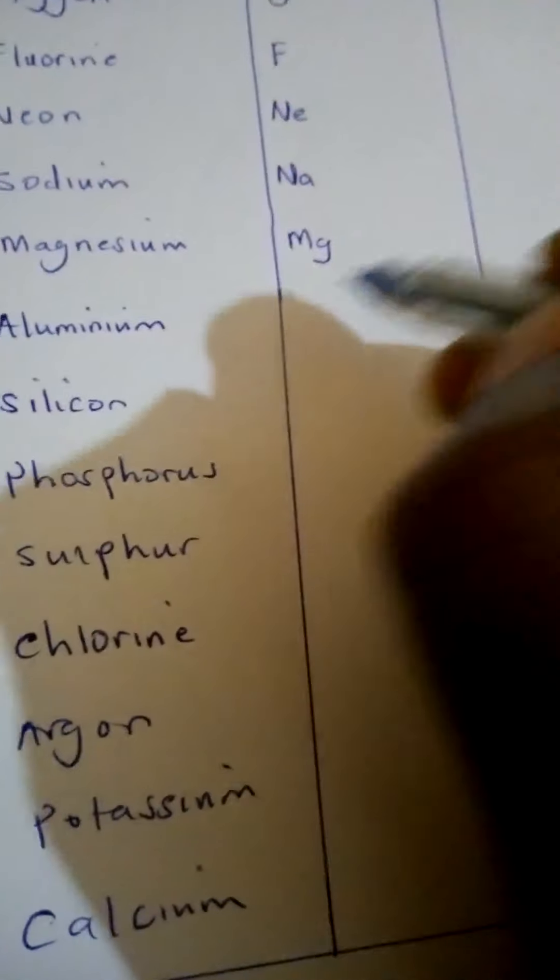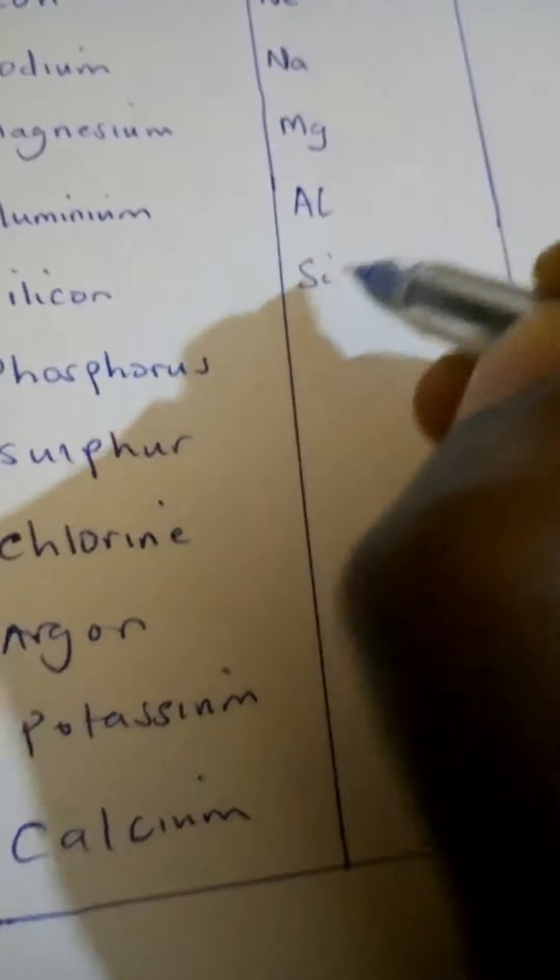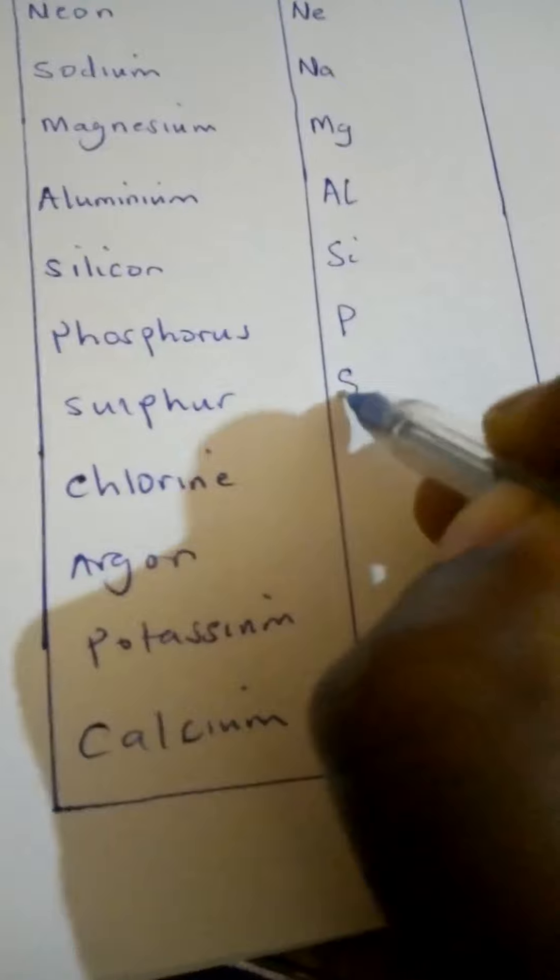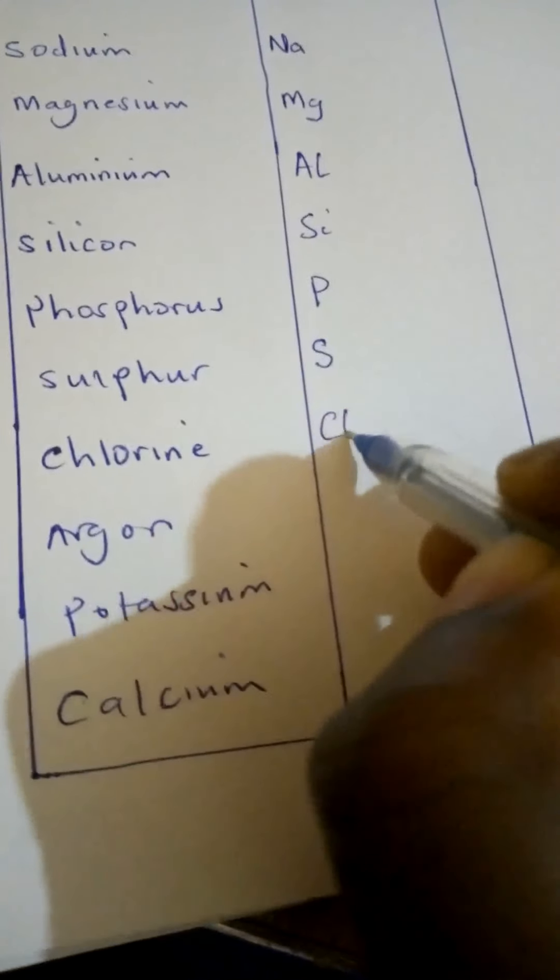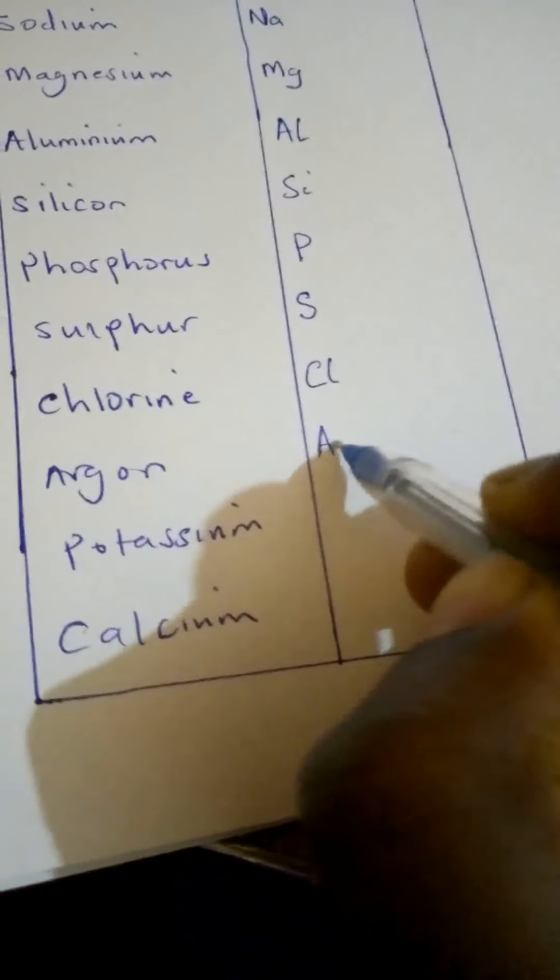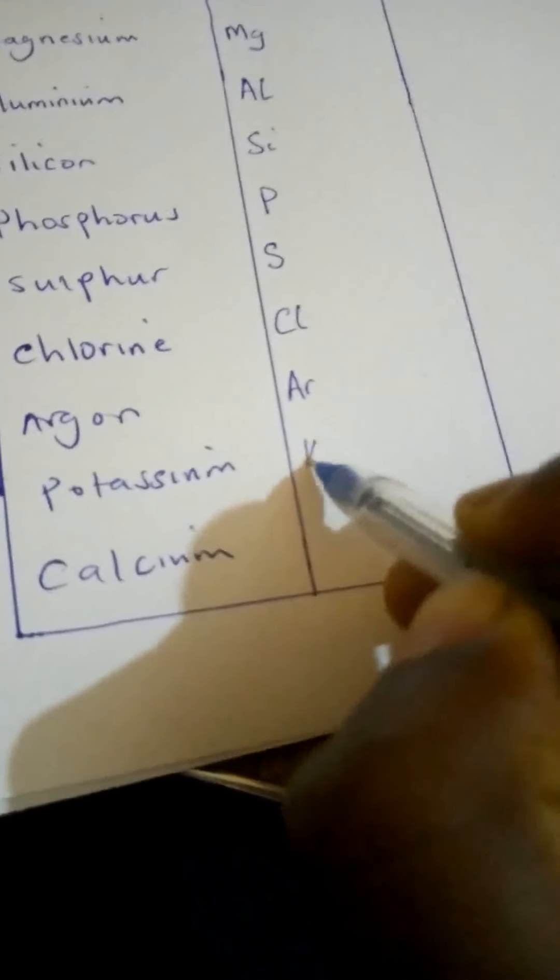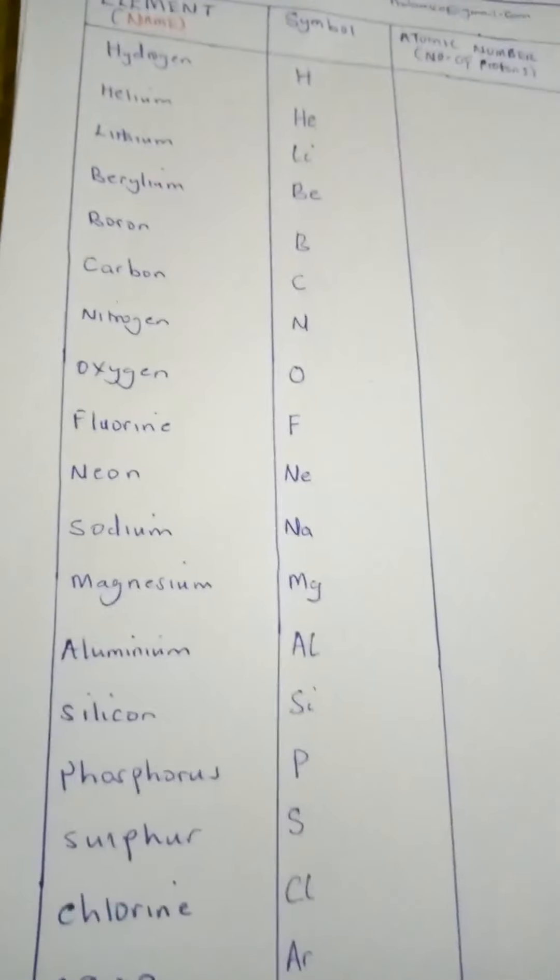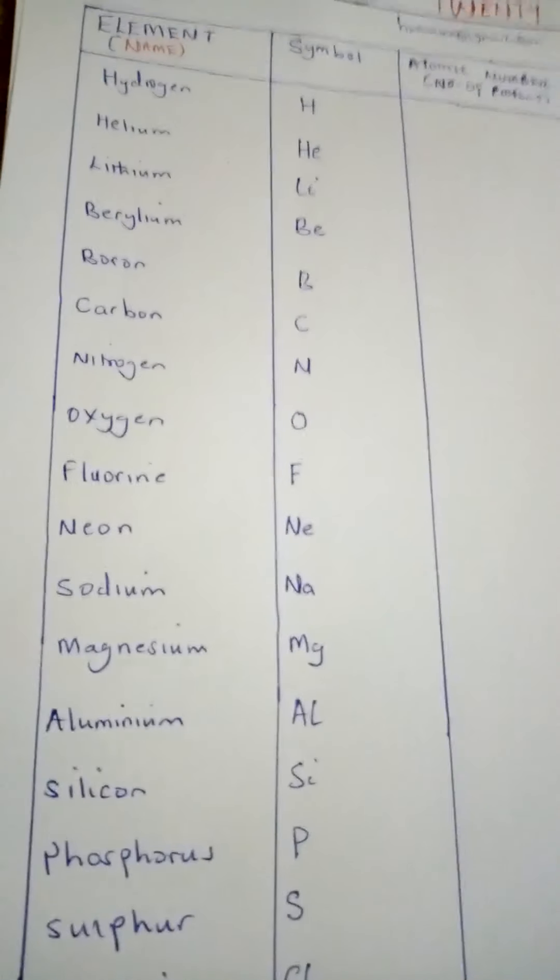So slowly, we go to aluminium, AL, silicon, SI, phosphorous, P. Are we together? Sulfur, S. Chlorine, CL. Argon, AR. Potassium, K. And then lastly, calcium, CA. So if you can be able to recall how to write all these ones, the way how they are, you'll be a very good student.